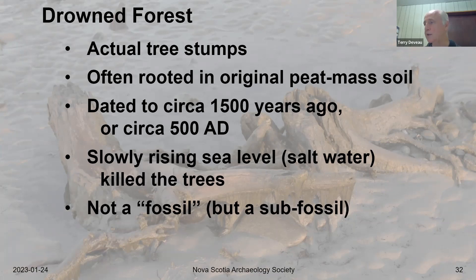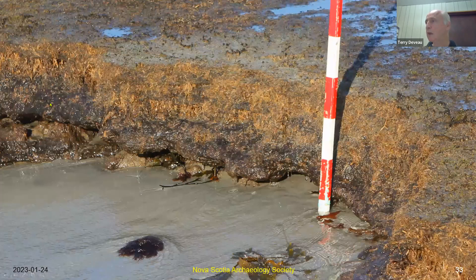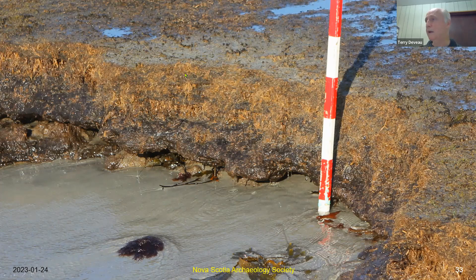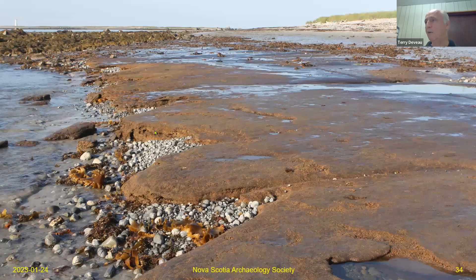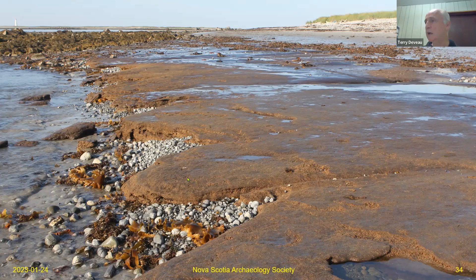These are pieces of wood — not fossils at all — that were growing in that actual spot roughly 1,500 years ago. Even the roots themselves are still in a version of the original soil. It's the rising sea level that killed the trees. Technically you don't call them fossils but they can be called sub-fossils, because a true fossil is stone. The peat mass in many cases is the original soil from more than 1,500 years ago.